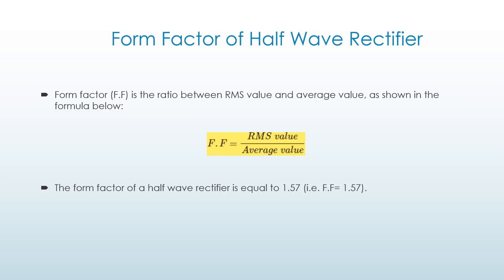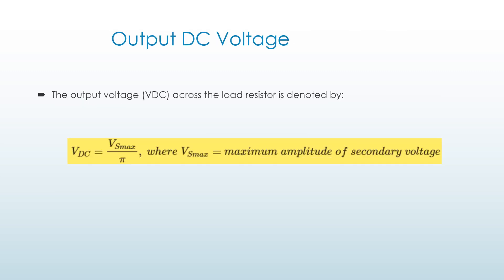Form factor of a half wave rectifier is the ratio between the RMS value and the average value, as shown in the formula below. The form factor of a half wave rectifier is equal to 1.57. The output DC voltage VDC across the load resistor is given by VDC equal to Vsmax upon pi, where Vsmax is equal to the maximum amplitude of the secondary voltage.